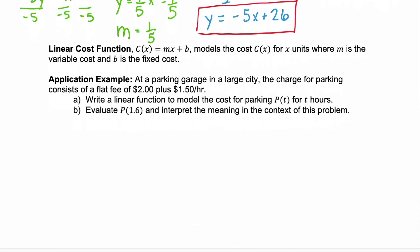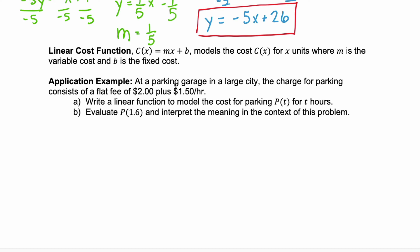Let's look at an application. You need to know a linear cost function. A linear cost function says cost c is equal to mx plus b. Well, m is the variable cost times x units plus b, which is the fixed cost. Look at this example. We have a parking garage in a large city. The charge for parking consists of a flat fee of $2. The flat fee is a fixed cost, so that's b. And then they charge $1.50 per hour. That's our slope times the number of hours.